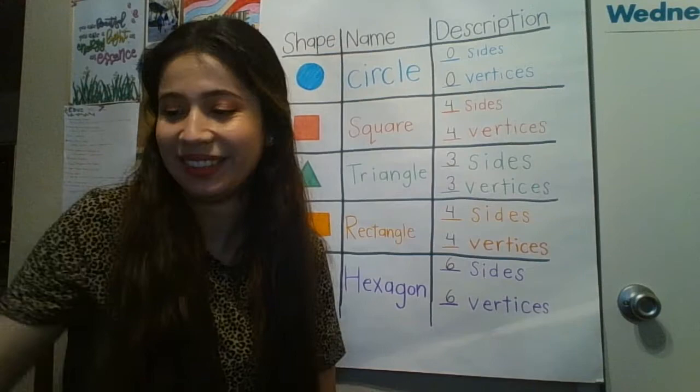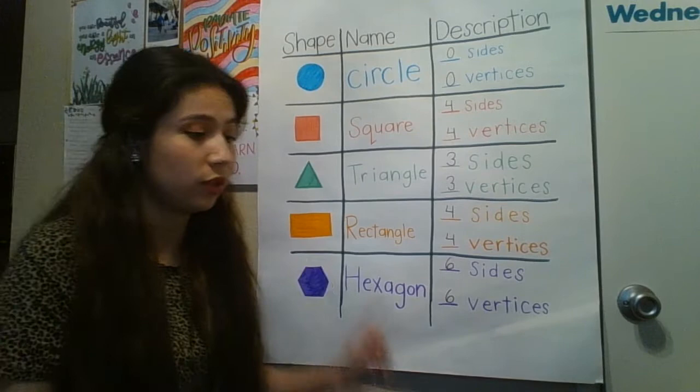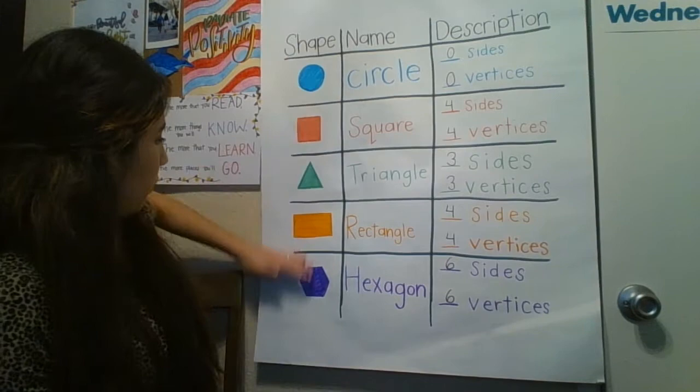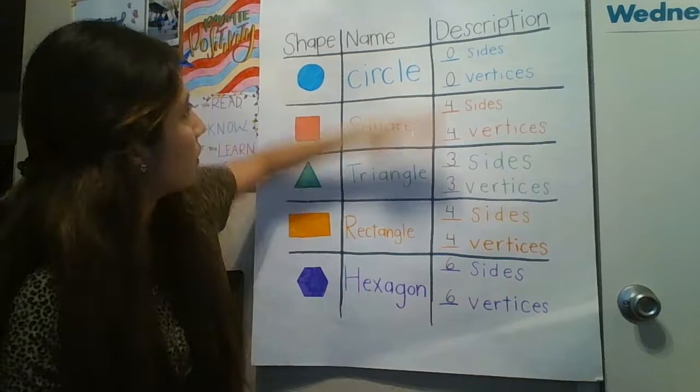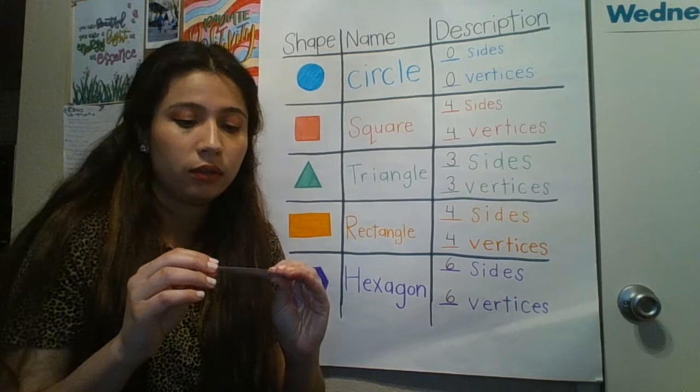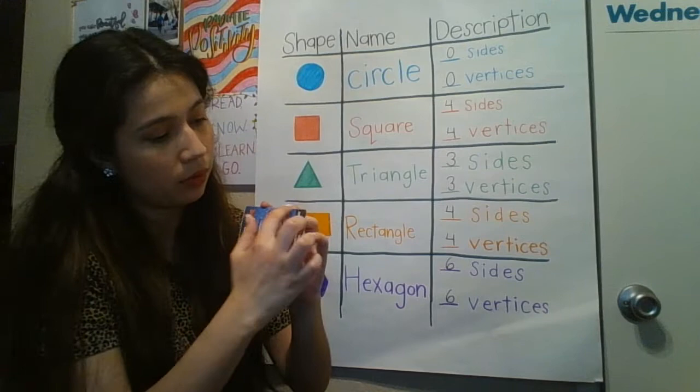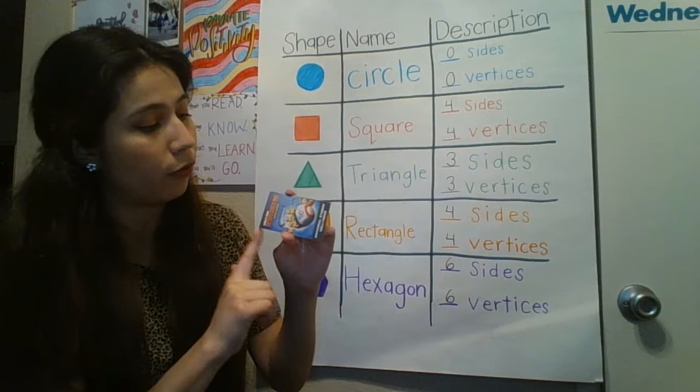The next one is a rectangle. There are lots of rectangles everywhere. For example, this big piece of paper is actually a rectangle because these sides are longer than these sides. I also found this little Universal Studios card — a ticket. It's a rectangle. I know it's a rectangle because these sides are longer than these sides; the sides are not equal. And it has four vertices.